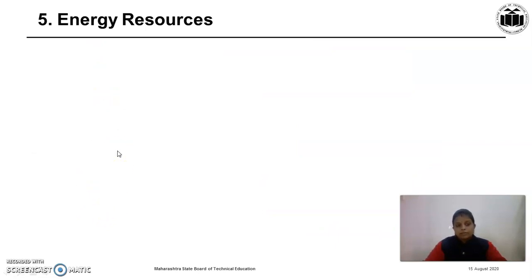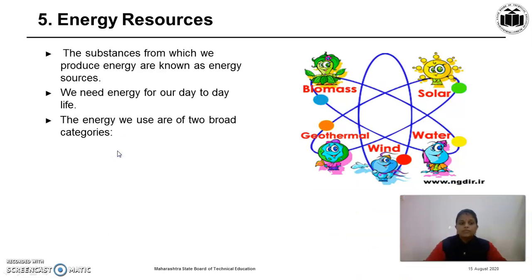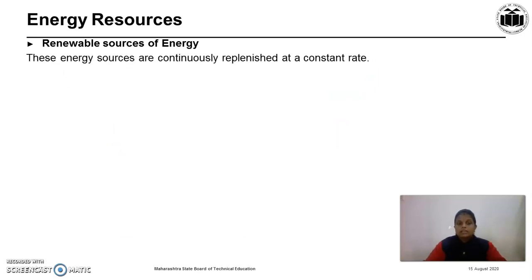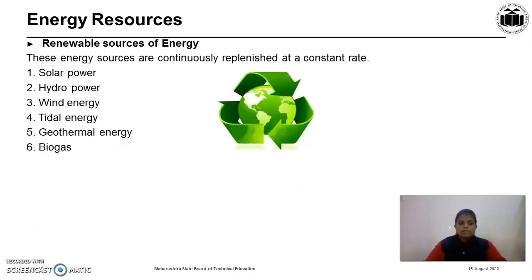The last type of resource is energy resources. The substances from which we produce energy are known as energy sources. We need energy for our day-to-day life — for each and every activity we require energy. Energy sources are of two broad categories: renewable energy and non-renewable energy. Renewable sources of energy are continuously replenished at a constant rate, meaning they are not exhaustible and can be regenerated according to our requirement. Examples: solar power — energy from sunlight; hydropower — energy from water flow; wind energy — from air flow; tidal energy — from sea tides; geothermal energy — from the interior heat of the earth; and biogas — energy from biomass.